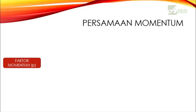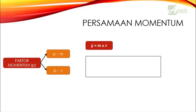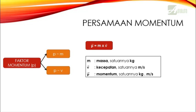Persamaan momentum: dari kedua faktor tersebut bisa ditulis secara matematis bahwa P sebanding dengan massa dan kecepatan, atau P sama dengan massa dikali kecepatan (P = mv). P di sini adalah momentum — ada tanda panah menandakan bahwa itu besaran vektor. M itu massa, satuannya kilogram. V itu kecepatan, juga besaran vektor — jadi selain besarnya, arahnya juga diperhatikan — satuannya meter per sekon. Satuan momentum adalah kilogram meter per sekon.